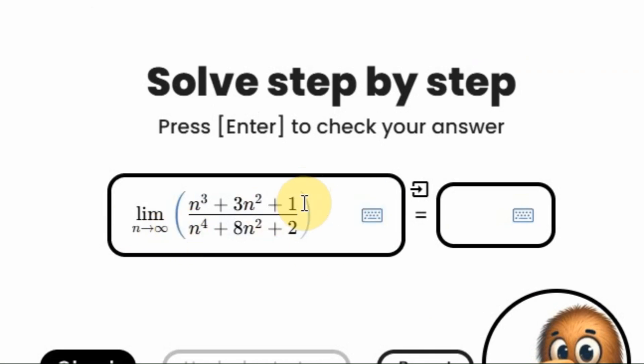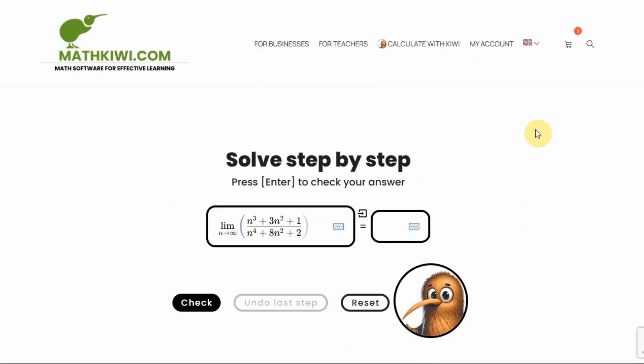N approaches infinity, so both the numerator and the denominator approach infinity. This is a very typical example of a method I call factoring out the highest power.